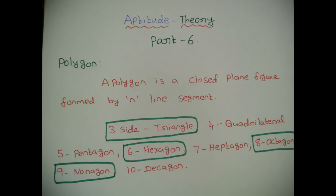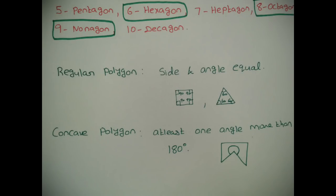What does one line make? One line. Three lines make one triangle. You have 4 lines — what do you want? A square or a rectangle. That is the quadrilateral. So then: 4 sides is a quadrilateral, 5 sides is a pentagon, 6 sides is a hexagon, 7 sides is a heptagon, 8 sides is an octagon, 9 sides is a nonagon, 10 sides is a decagon.